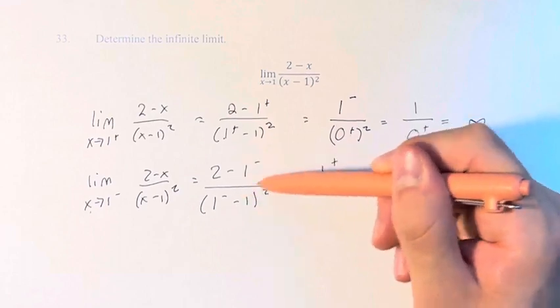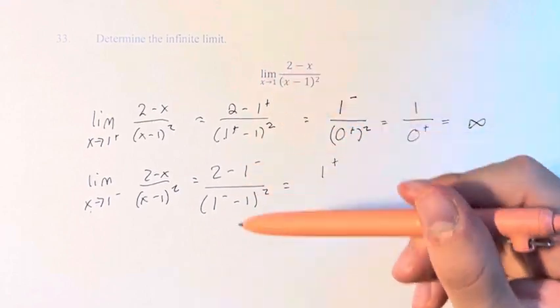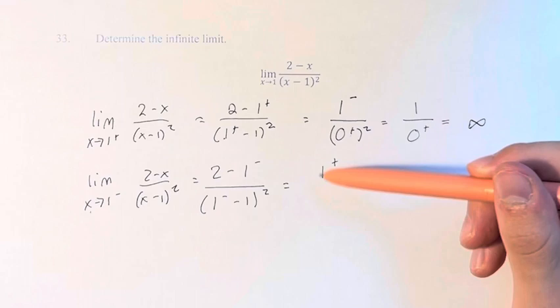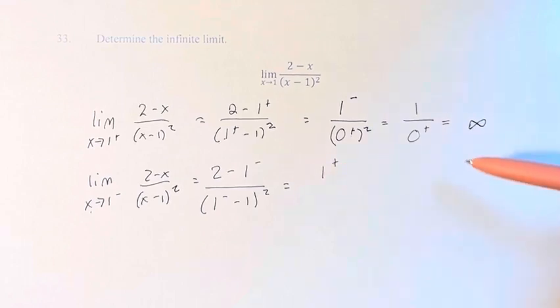And that makes sense. These numbers are slightly less than 1, so 2 minus those numbers isn't going to quite get you all the way to 1, but it's going to be coming at it from the right, which is slightly greater than 1.